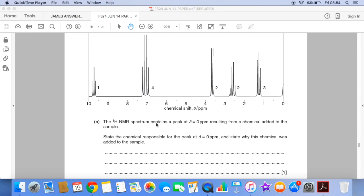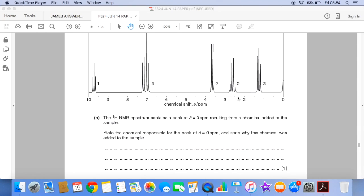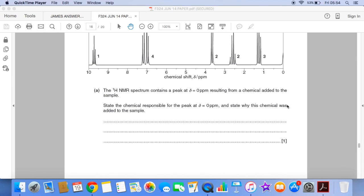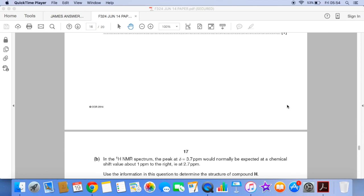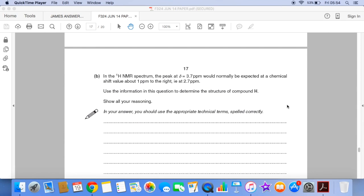So the first part of the question is basically asking what chemical is causing this peak at delta 0 ppm? And then the rest of the question is asking us to determine the structure of compound H. And the only thing to bear in mind is the peak at 3.7 has been shifted from where it should be and it's saying it should be at 2.7.